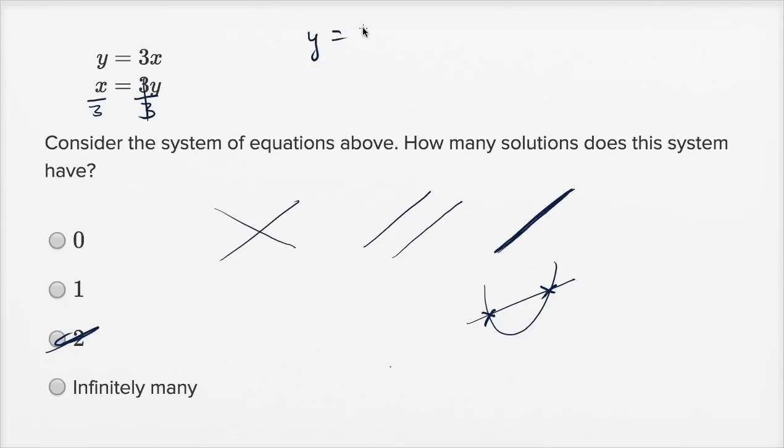and we get y is equal to x over 3. So this first one is y equals 3x. The second one is y equals x over 3, or we could say one third x.